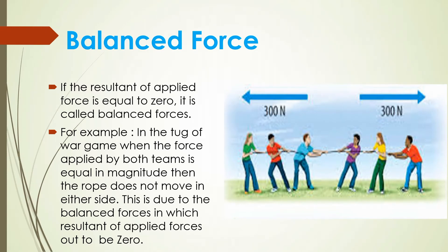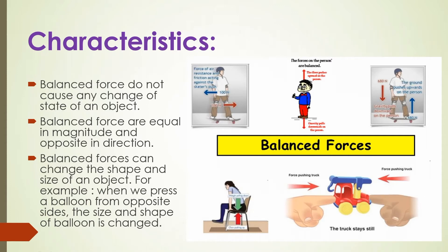The characteristic of balanced force is that it does not change the position of any object. This force is equal in magnitude but opposite in direction. For example, if we compress a balloon from the left and right with equal forces, the net force is zero. The shape and size of the balloon will change, but the position will not change. Balanced force changes shape and size but not position.